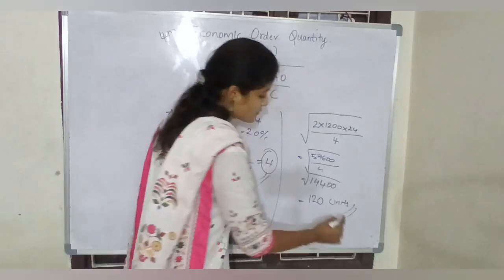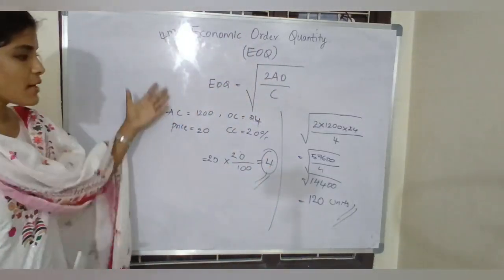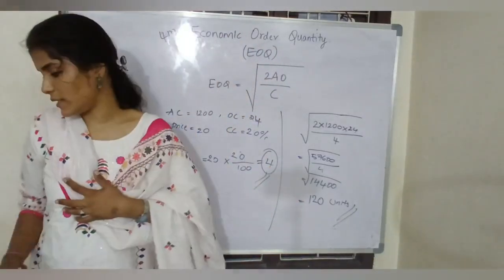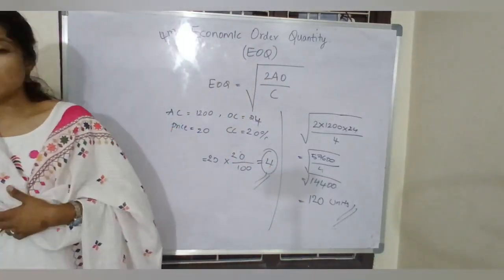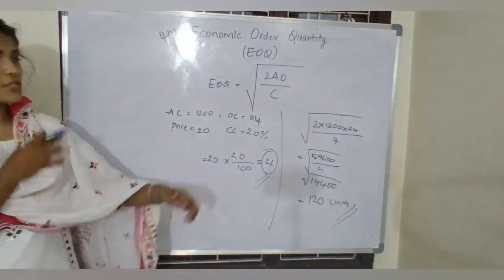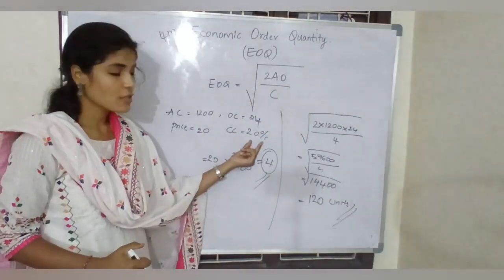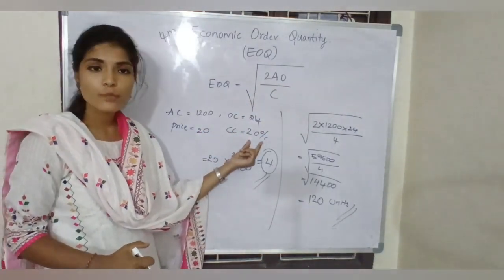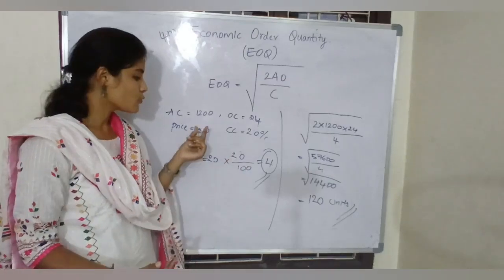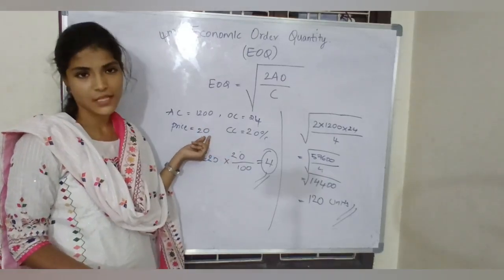So 120 units is your EOQ. That's it — this is simple, and 4 marks will be given for this only. All you need to do is remember the formula, and carrying cost should be converted into a number through the price given.